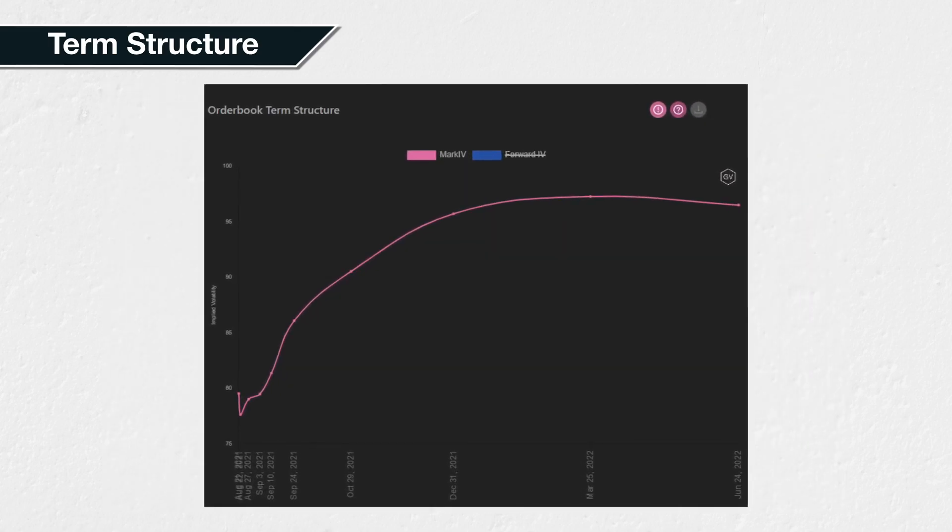The same is true for the volatility term structure for options, which also fluctuates. This is the current implied volatility term structure for the Bitcoin options on Deribit. The nearest dates have implied volatility of a little under 80%. This then increases slowly the further out in time we move, until eventually topping out at about 97%.